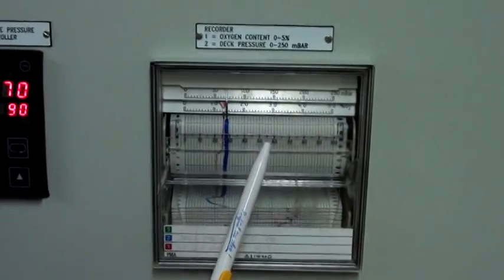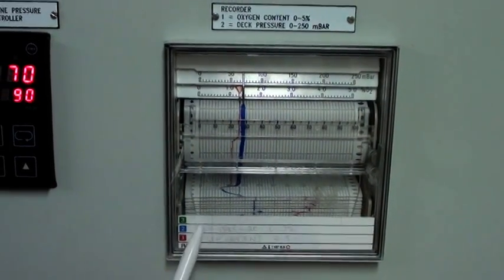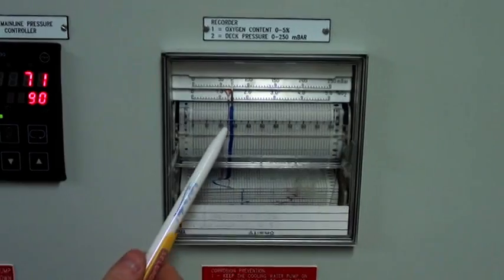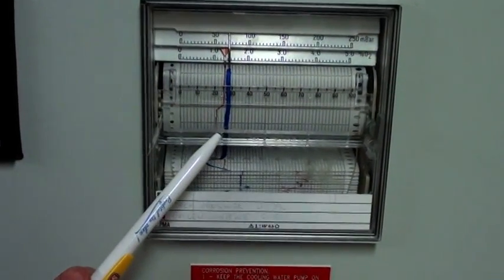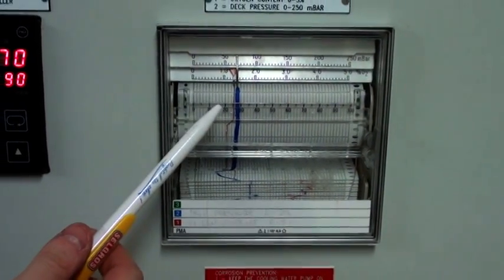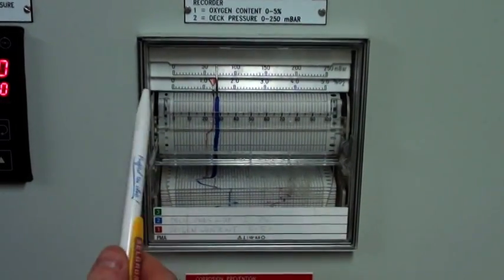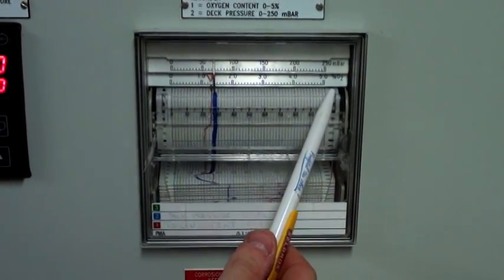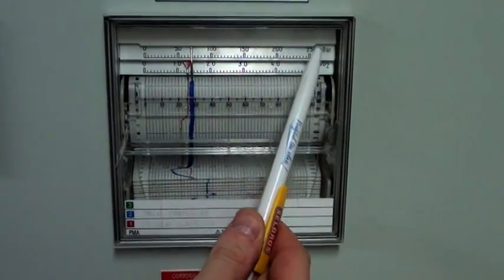On the starboard side you have the recorder of inert gas with two indicators. The blue one is indicating the pressure in the line, and the red one is indicating the oxygen content. So the oxygen content scale is from 0 to 5%, and the pressure indicating scale is from 0 to 250 millibars.